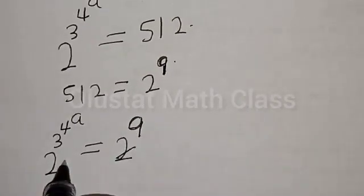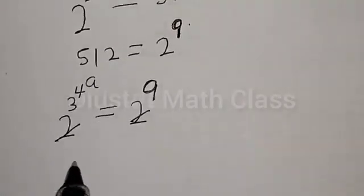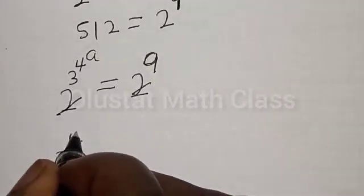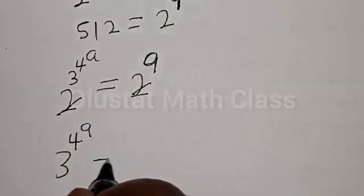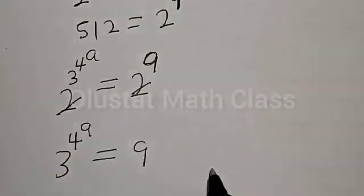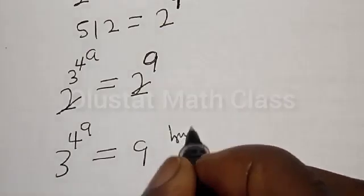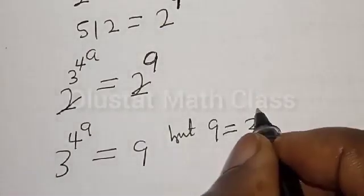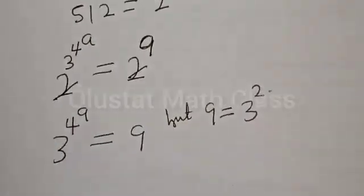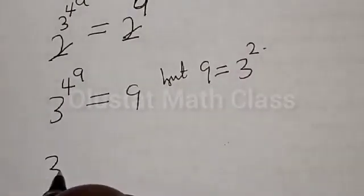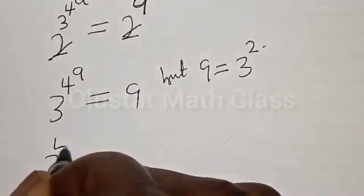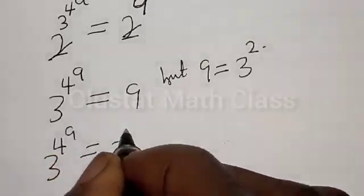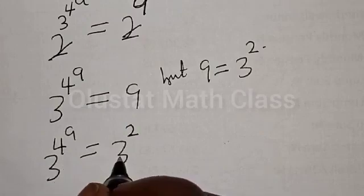We have the same base, so the base 2 cancels. We are left with 3 raised to power 4 raised to power a is equal to 9. Now 9 is the same as 3 raised to power 2. So 3 raised to power 4 raised to power a is equal to 3 raised to power 2.